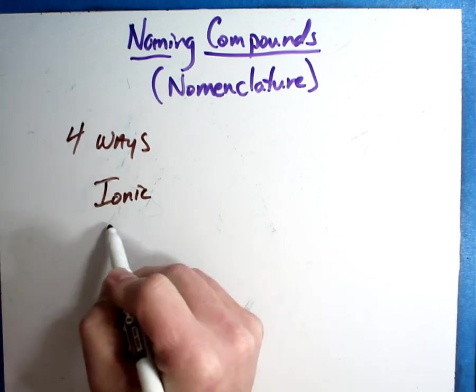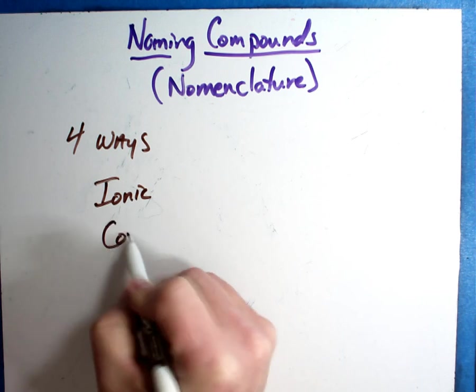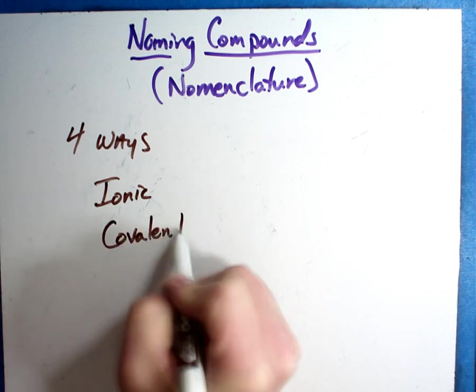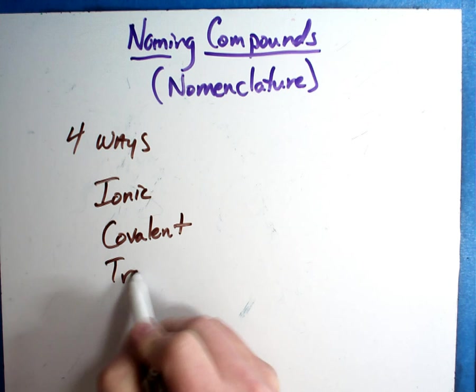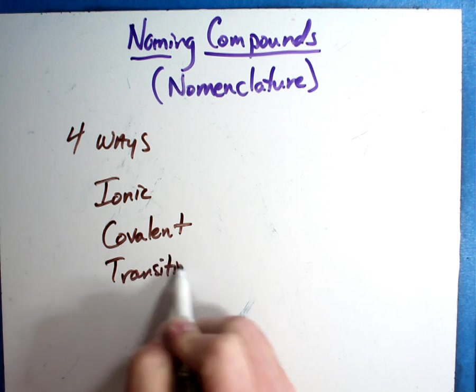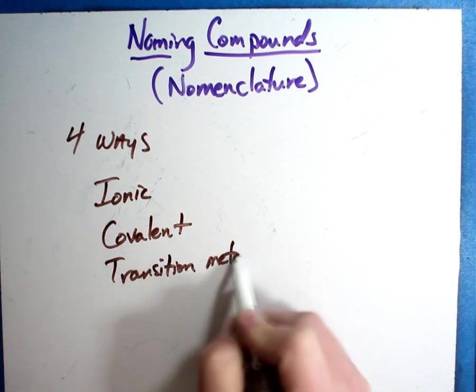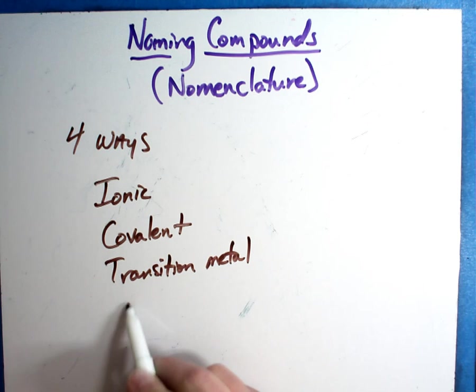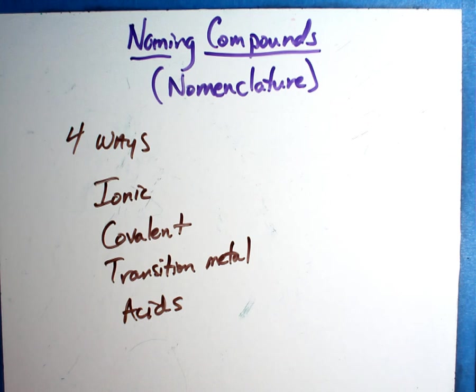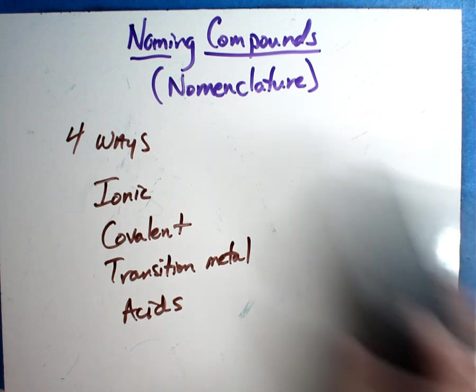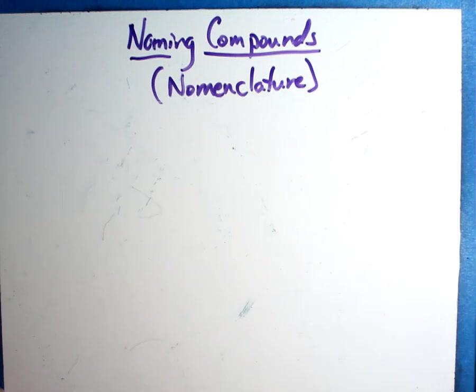There are actually four ways to name compounds: ionic compounds, covalent compounds, transition metal compounds, and acids. I'm going to take one video at a time and walk through each of them. This tends to trip up students if you don't catch everything, so watch carefully. We're going to start first with ionic in this video.